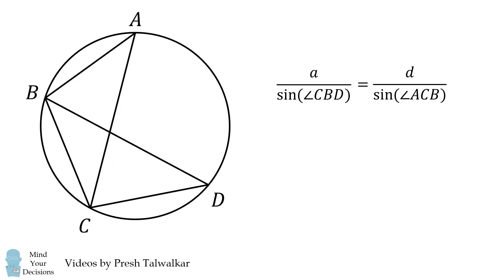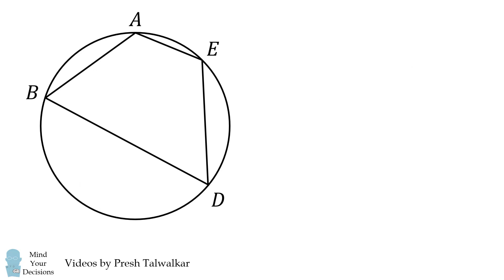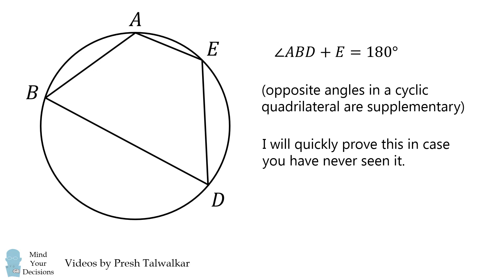This is quite similar to what we need to prove, but we need to change the angles in the denominators. So let's consider quadrilateral ABDE. Angle ABD plus angle E is equal to 180 degrees. This is because opposite angles in a cyclic quadrilateral are supplementary. You could just cite this on the exam, but if you've never seen it, let me show you a quick proof.